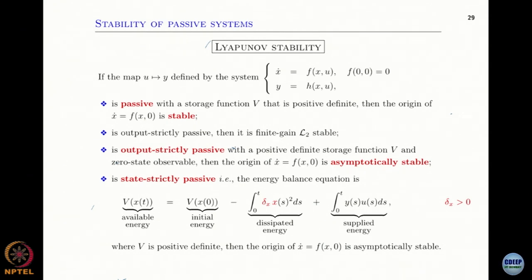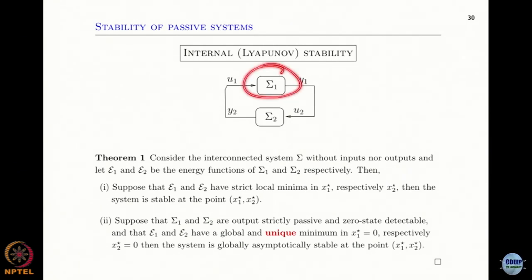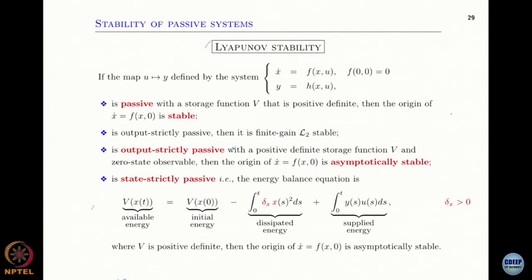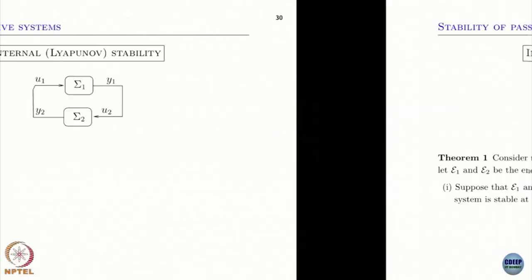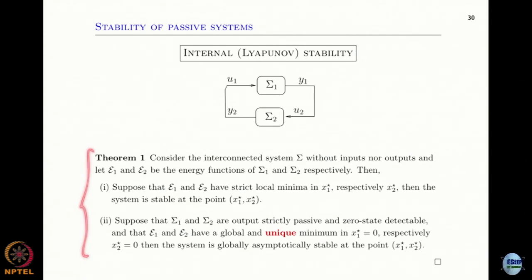The moral of all this is: if you think in terms of passivity, you have to figure out the energy function of your system and use that as a Lyapunov function, then try to come up with some negative quadratic terms in your derivative. And now you have an interpretation: interconnection of passive systems is passive, and we can say things about stability of that passive interconnection. This theorem is taken from a book by van der Schaft.